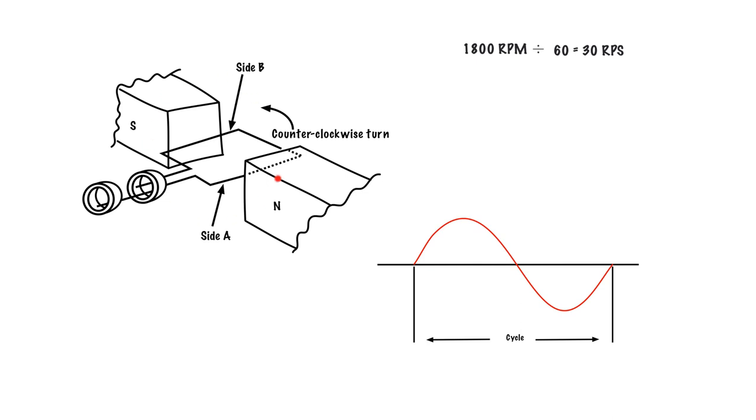If it's a two-pole alternator like this, it is going to create 30 of these sine waves because this is going to spin 30 times per second. 30 sine waves, you're going to get 30 cycles per second or 30 hertz.